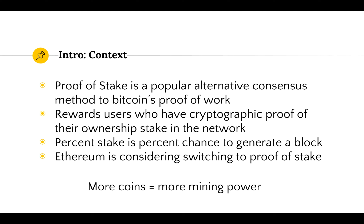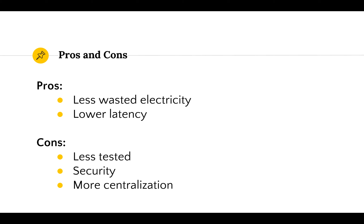Ethereum is considering switching to proof of stake for the following reasons. Because there's no expensive mining equipment, it uses way less electricity and has lower latency because it doesn't need to be confirmed between all of the mining nodes. The cons are that it's less tested at scale, it has less security because there isn't millions of dollars of mining equipment securing the network, and it leads to more centralization because someone can own coins without needing to also invest in mining equipment.